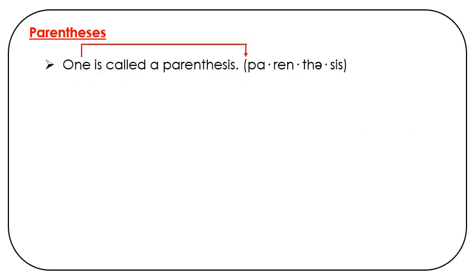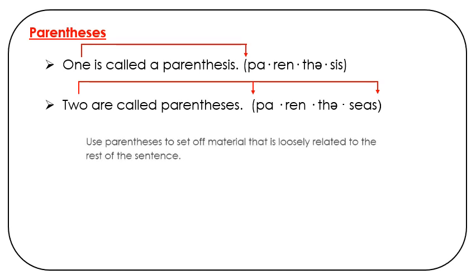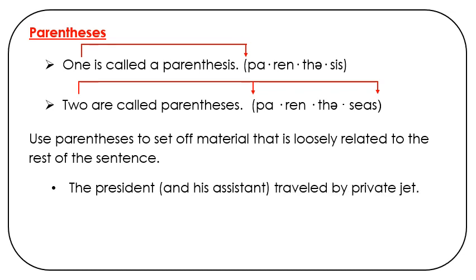Parentheses. One is called a parenthesis; two are called parentheses. Use parentheses to set off material that is loosely related to the rest of the sentence, not an abrupt change like you would use with an EM dash for. For example: The president and his assistant traveled by private jet.